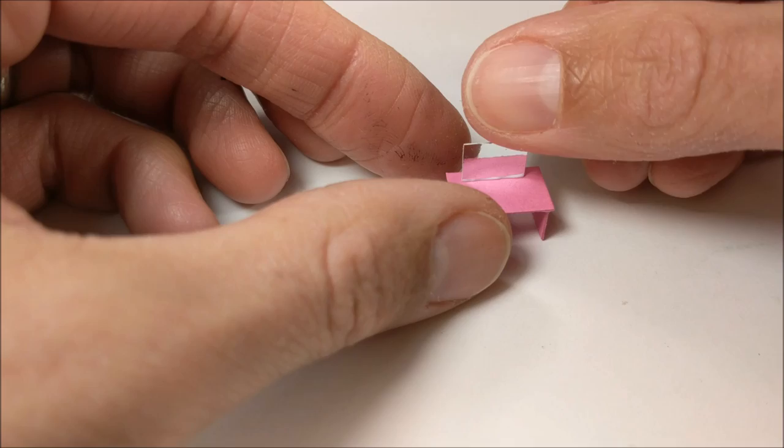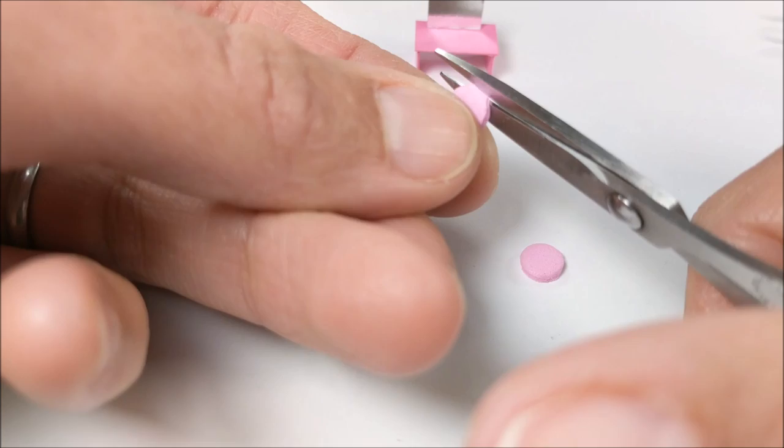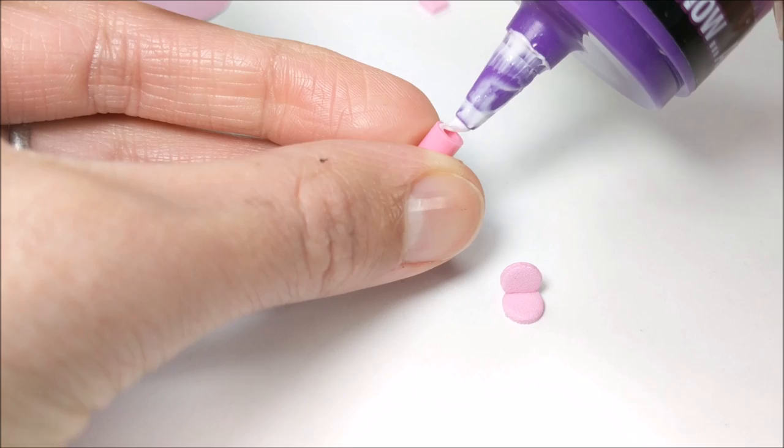And for the little chair, I use my multi hole punch to punch out two circles of craft foam paper. I cut one straight and glue it together. And then when they dry, I glue it to a little perler bead.